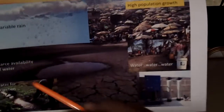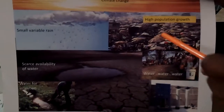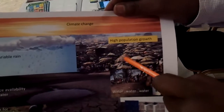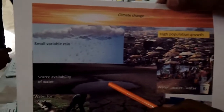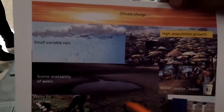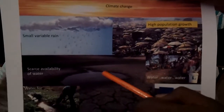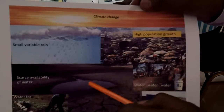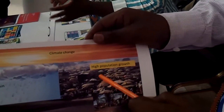But this system is affected by high population growth. This high population growth demands more water from already scarce water. So, somehow, this adaptation effort will be minimized by high population, which is demanding more water from already scarce water. So, this is a factor.